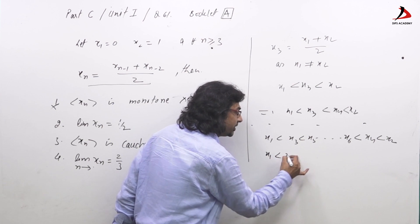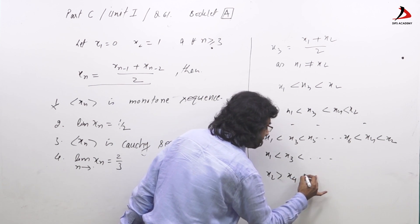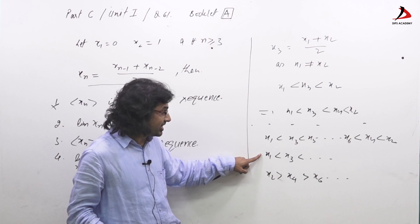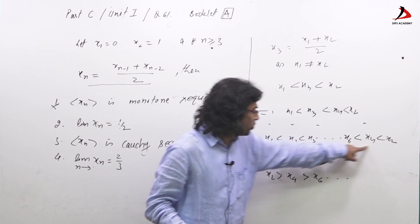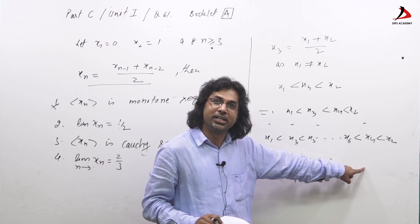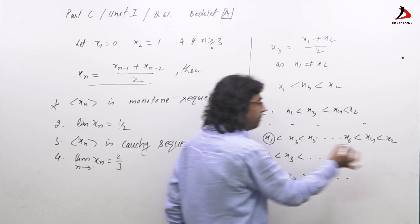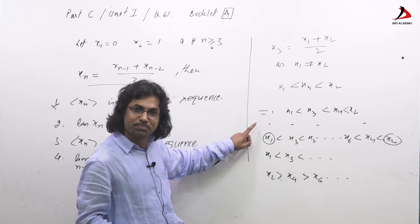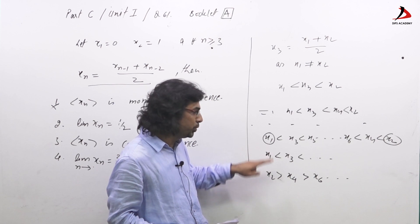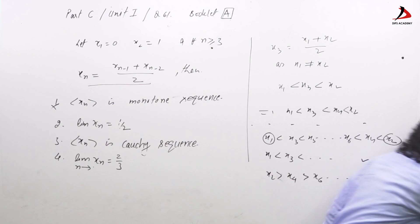Taking the two separate complementary subsequences — odd-indexed terms x₁, x₃, x₅, … and even-indexed terms x₂, x₄, x₆, … — both are monotonic. Since all terms lie between x₁ and x₂, the sequence is bounded, hence these two subsequences are bounded. Every monotonic bounded sequence is convergent, so both complementary subsequences are convergent.